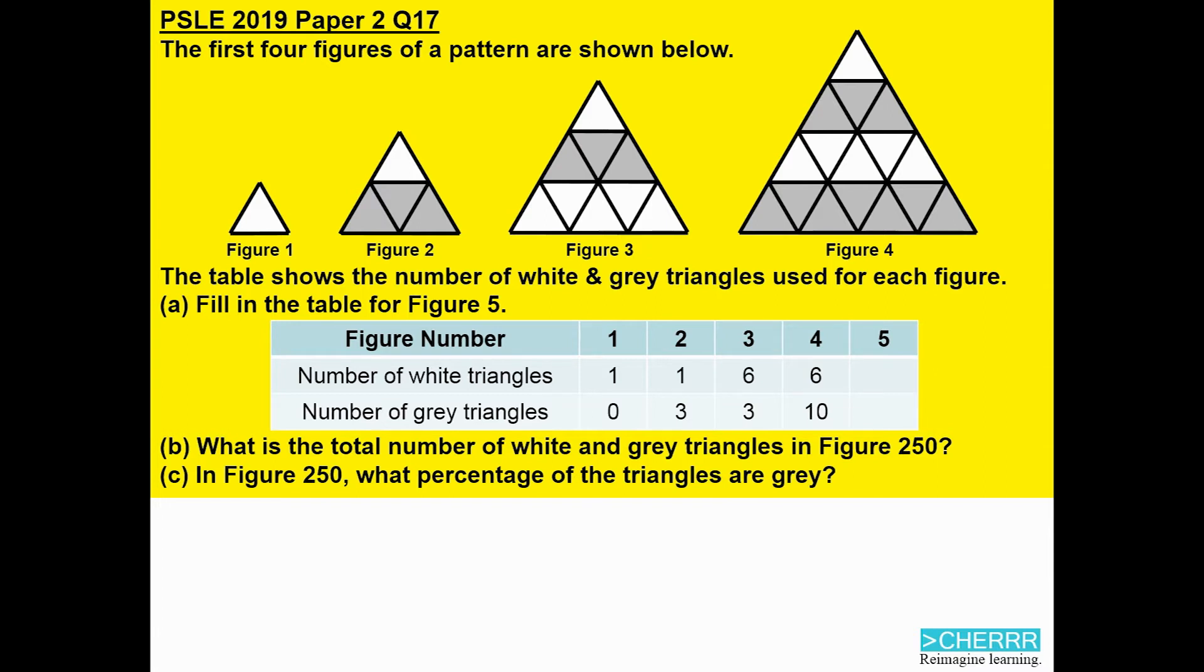The first four figures of a pattern are shown below. The table shows the number of white and grey triangles used for each figure. A, fill in the table for figure 5. B, what is the total number of white and grey triangles in figure 250? C, in figure 250, what percentage of the triangles are grey?